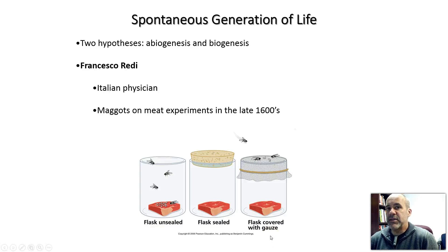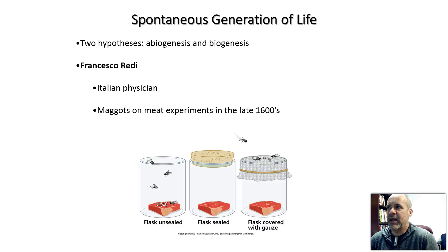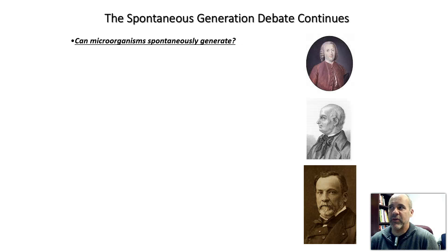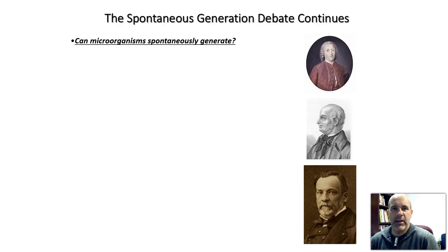That led to the idea that spontaneous generation — abiogenesis — does not occur. The maggots were coming from flies, which are already living, and that supports the idea of biogenesis. But maggots and flies we can see with the naked eye, and meanwhile Antony van Leeuwenhoek had discovered microorganisms, so the debate continued.